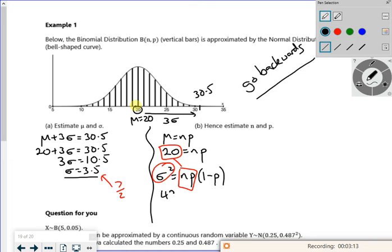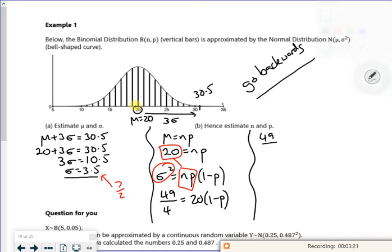So I've got 49 over 4 is 20 times 1 minus p. So if I divide 3 by the 20, I've got 49 over 80 is 1 minus p. Then do the rearrange. It's 1 minus 49 over 80. So that's going to be 31 over 80, which the completed pack says is 0.3875.